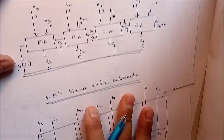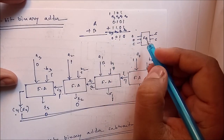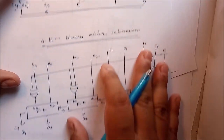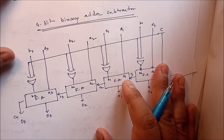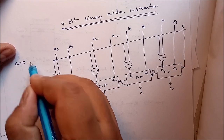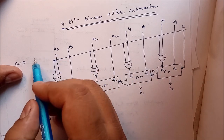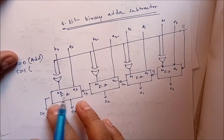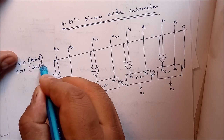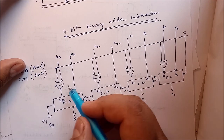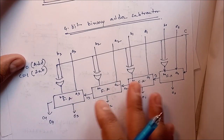In the full adder circuit, there are three inputs a, b, c and two outputs: s and c. Now we can see that if c is equal to zero, this particular circuit acts as an adder, and if c is equal to one, this same circuit will act as a subtractor.